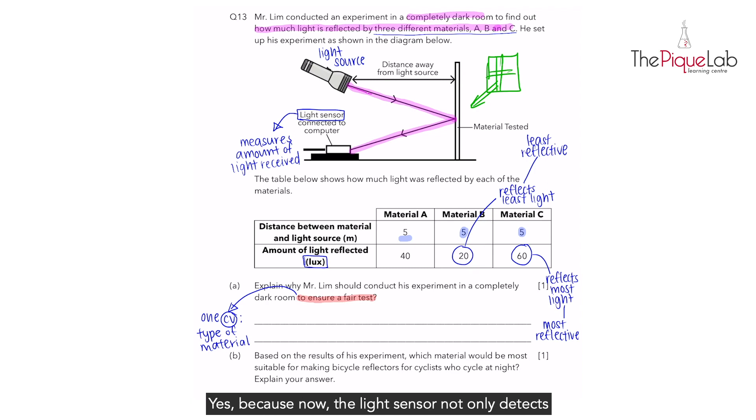Yes, because now the light sensor not only detects the light reflected off the material, the light sensor also detects the light from the surroundings. So would the experiment be fair? No, it will not be accurate at all. It will not be a fair test because the light sensor receives light from different sources. I cannot tell whether it's the light reflected off the material that affects the results or is it the light from the surrounding. Conducting the experiment in a dark room ensures that the light sensor only receives the light coming from the torch that is reflected off the material and not any other light sources in the surrounding. And that's your answer for part A.